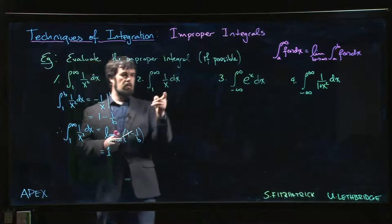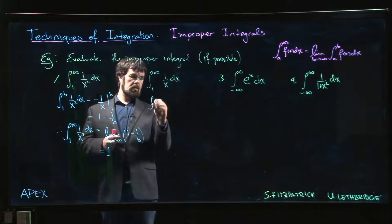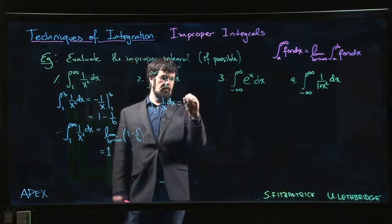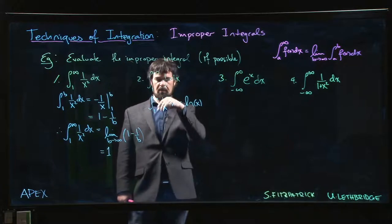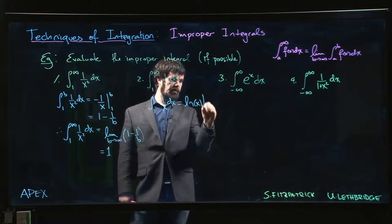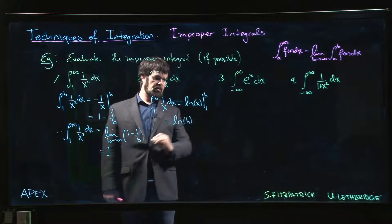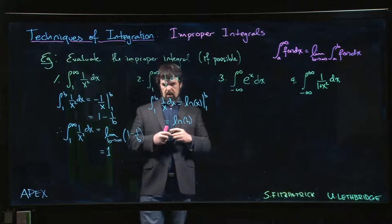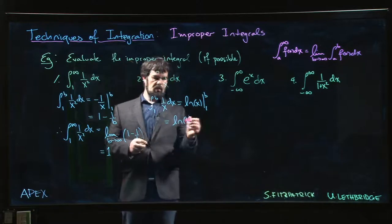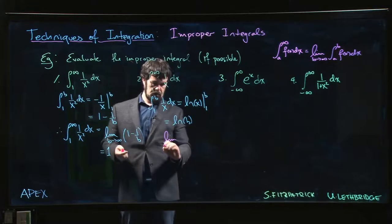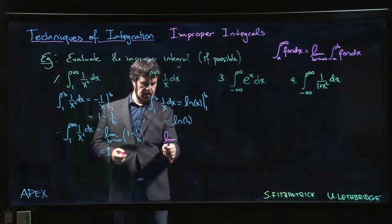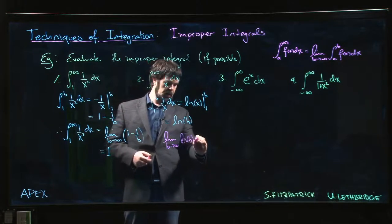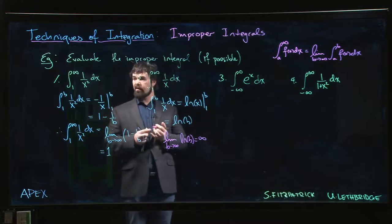Now for this one, we do the integral from 1 to b of 1/x dx. That gives us log|x| — we're working with positive numbers here — so log x from 1 to b gives the natural log of b minus the natural log of 1, but log of 1 is 0. The limit as b goes to infinity of log b is infinite, so we don't get a finite value.